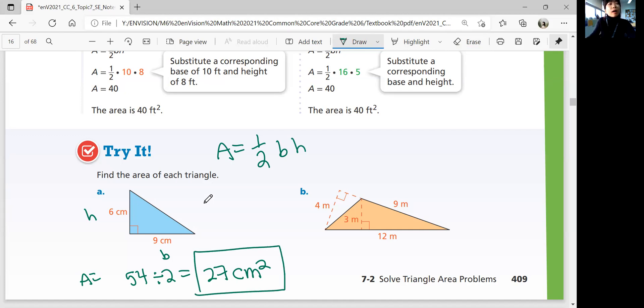And then part B. Which one are you going to use as a base? If you use 12 as a base, your height is 3. If you use 9 as a base, your height is 4. So either 9 times 4 divided by 2, or 12 times 3 divided by 2, works. They're both going to equal 18 square meters.